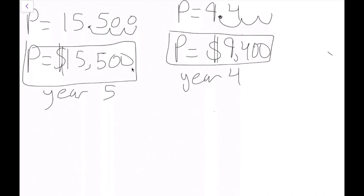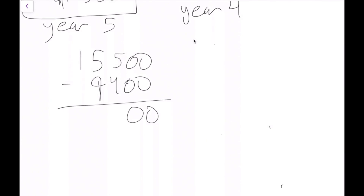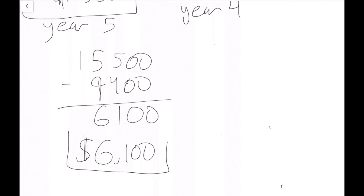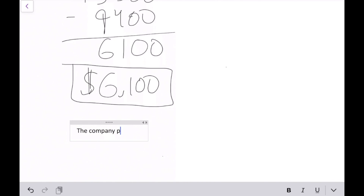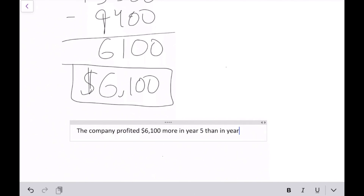Now I just subtract year 5 minus year 4: $15,500 minus $9,400. 500 minus 400 is 100, and 15,000 minus 9,000 is 6,000, so that gives $6,100. The company profited $6,100 more in year 5 than in year 4. And that is our word answer to our word problem.